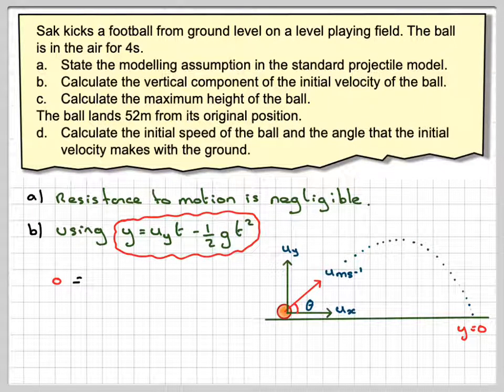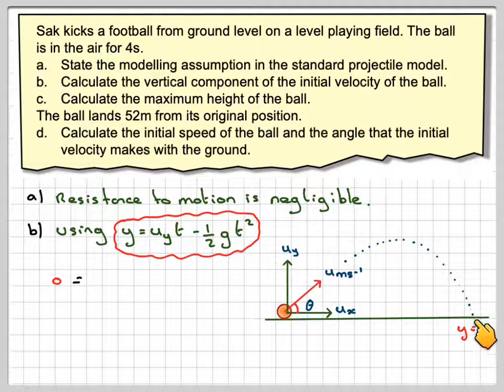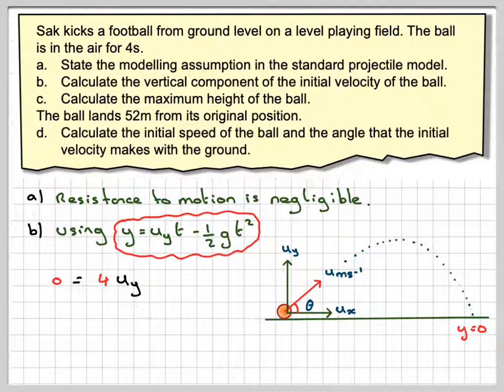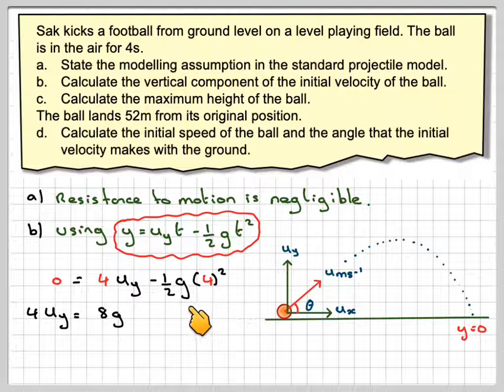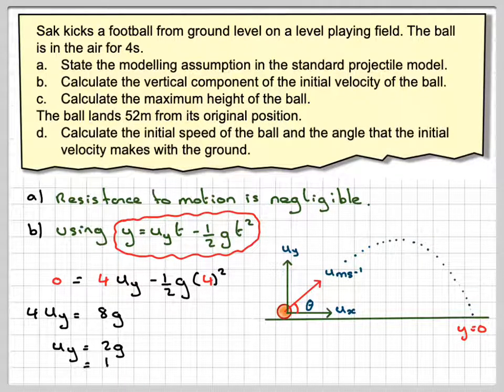we're going to have that zero, because its distance here will be zero, it's got back to the ground, will be equal to four uy and a half g times four squared. So it's four here because t is four. So rearranging that, we're going to have four uy, the component that I need to find, is equal to eight g, so it's half times 16, which is eight. And then uy will be two times g, which is 19.6 metres per second.